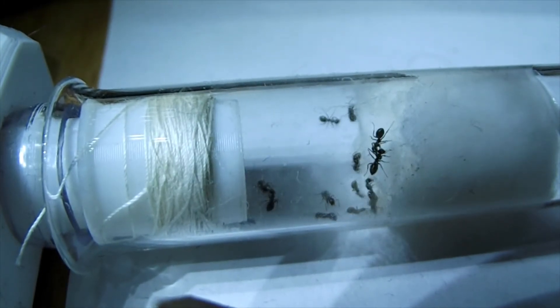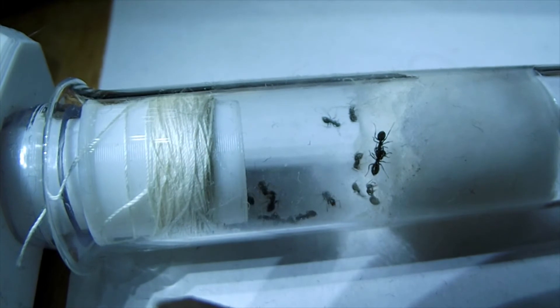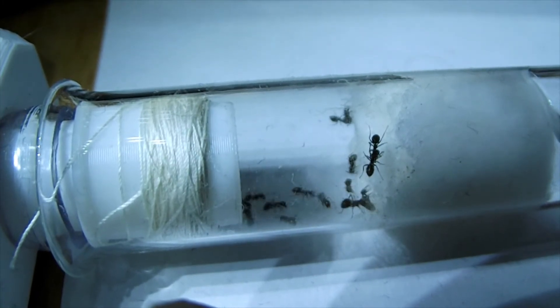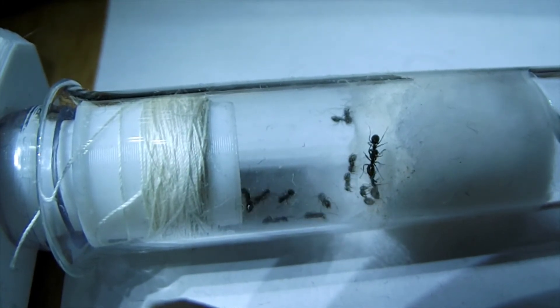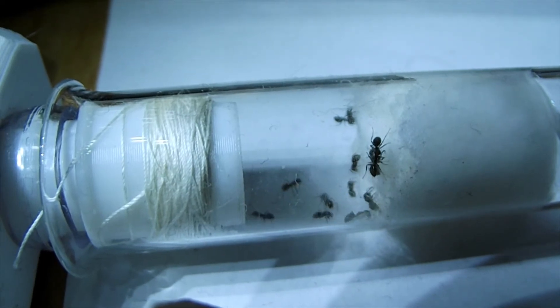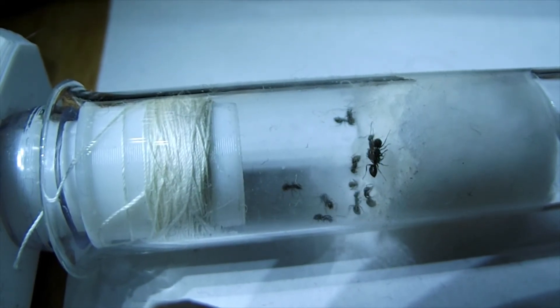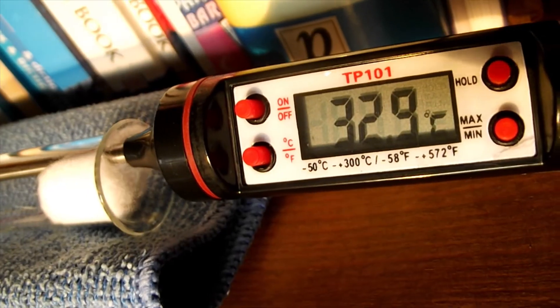The only other thing you need to worry about is that what we keep our ants in—glass, acrylic, etc.—is basically a greenhouse. Therefore, if direct sunlight starts to hit your setup... What I did here was...